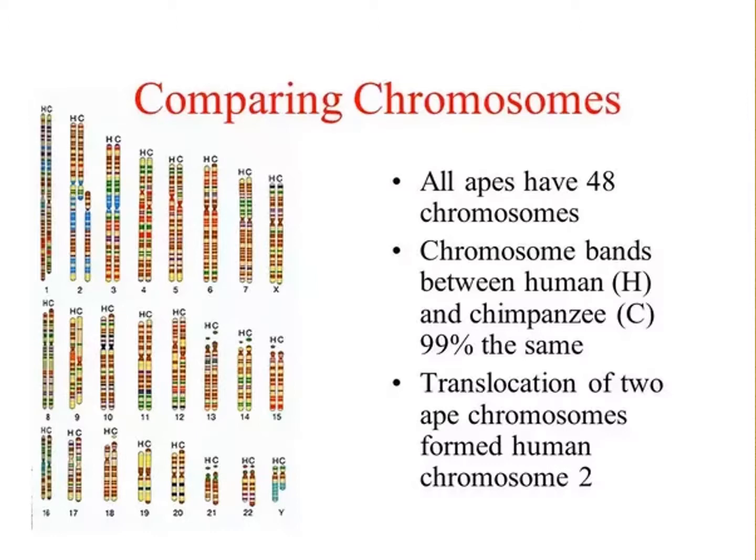There are also remnants of an extra centromere, as well as similar banding patterns with the equivalent chromosomes 2p and 2q of apes. So it seems fairly obvious to most that there was a chromosomal fusion event sometime in the past in the ancestry of modern humans.